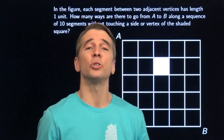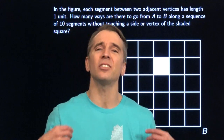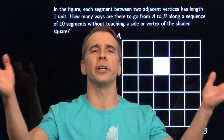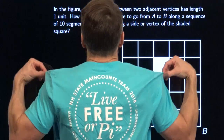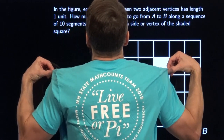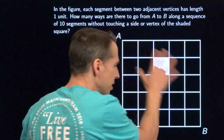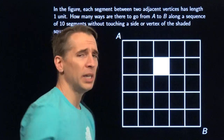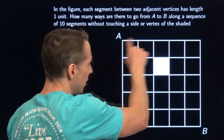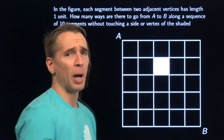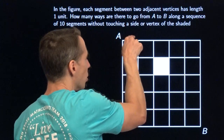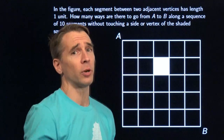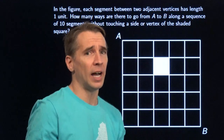This month's lesson goes out to the Math Counts team of New Hampshire and their glorious battle cry, Live Free or Pi. In this problem we have to get from A to B in ten steps. This square is five by five, so those steps are going to the right or down. We have to take ten of those steps — five to the right and five down.